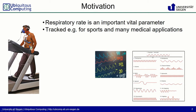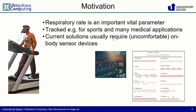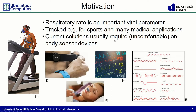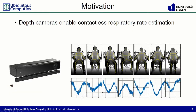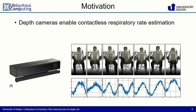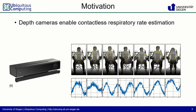Here on the right side you see for example normal breathing and different types of abnormal breathing. Current solutions, however, usually require on-body sensor devices like a respiration belt, something you put on the nose, or a mask-like spirometer. Can we do better? Yes, we can use depth cameras to estimate the respiratory rate from a distance.